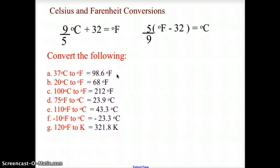75 degrees Fahrenheit is 23.9 degrees Celsius. 110 degrees Fahrenheit comes out to 43.3 degrees Celsius. Negative 10 degrees Fahrenheit comes out to negative 23.3 degrees Celsius. I warned you to be careful on this one because this is asking us to go from Fahrenheit to Kelvin. So first we have to convert Fahrenheit to Celsius, and then add the 273, and we get 321.8 Kelvin.